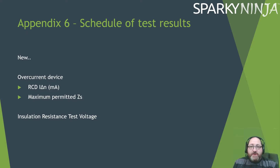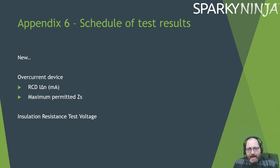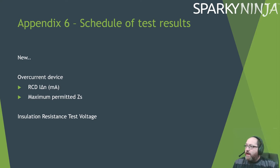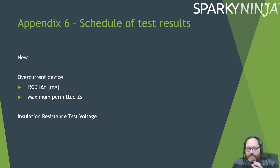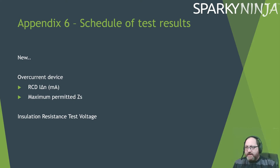For test results, there's now a requirement to record the milliamp rating of an RCD — we've had that for many years with NICEIC-type certificates. The maximum permitted Zs is also now included on the IET's standard. With the insulation resistance test, they no longer want the actual test voltage recorded — so 500V DC or 250V DC — that's a slight change to the schedule of test results.